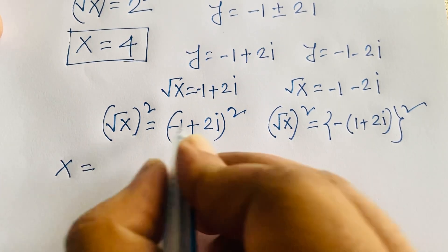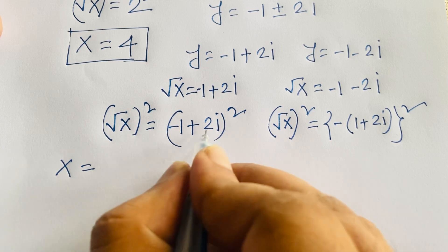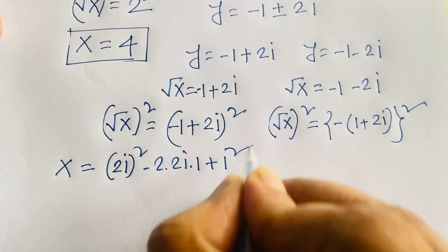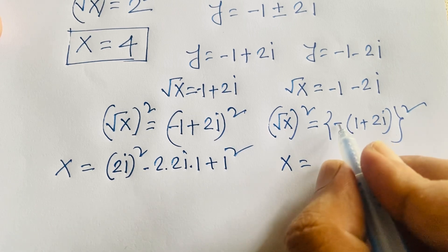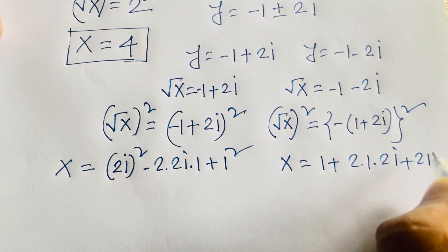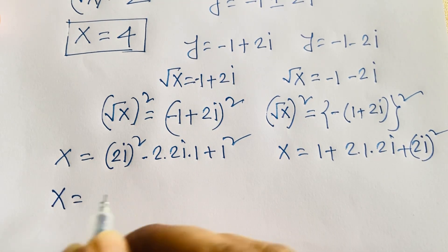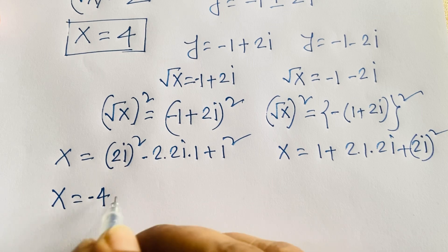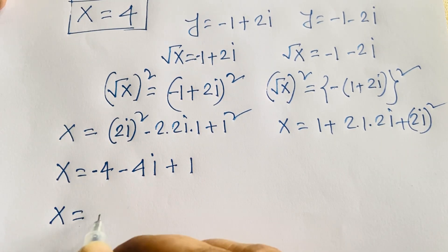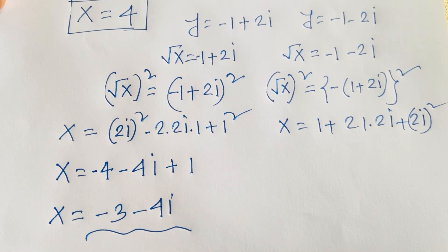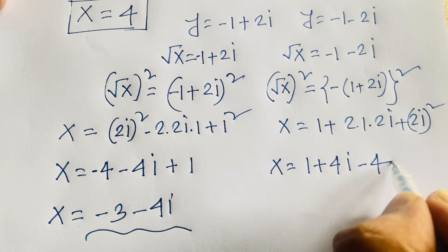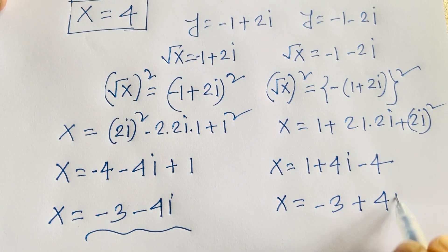Squaring y equals minus 1 plus 2i: (minus 1 plus 2i)² equals 1 plus 2 times 1 times 2i plus (2i)², which equals 1 plus 4i plus 4i². Since i² equals minus 1, we get 1 plus 4i minus 4 equals minus 3 plus 4i. Similarly, squaring y equals minus 1 minus 2i gives x equals minus 3 minus 4i. So the complex answers are x equals minus 3 plus 4i and x equals minus 3 minus 4i.